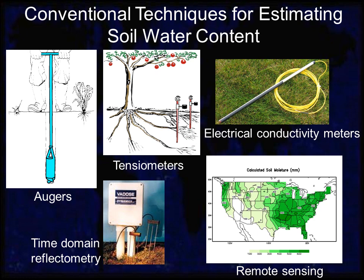I'd like to briefly discuss some of the differences between conventional techniques for estimating soil water content and GPR techniques. Most of you are quite familiar with most of the techniques, so I'm not going to discuss the mechanics of each technique, but just cover some general characteristics. Augers are the tried and true method of obtaining water content — these are usually our ground truth measurements, and we collect gravimetric water content using the augers. Tensiometers, electrical conductivity meters, and time domain reflectometry, or TDR, are sensors used for water content estimation. Each of these four techniques can provide accurate estimates of water content, but they are all point measurement techniques.